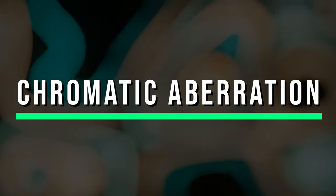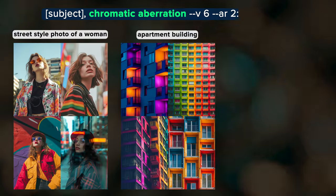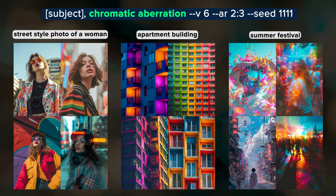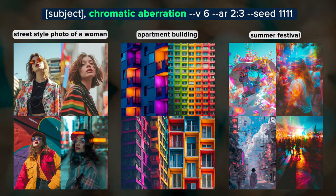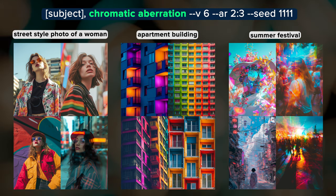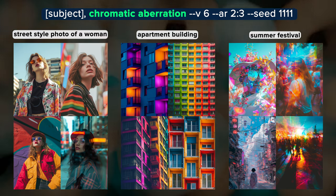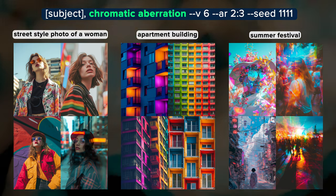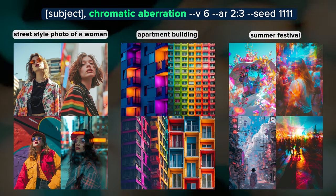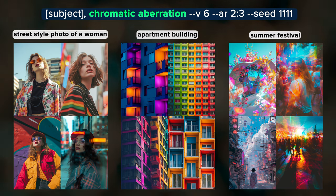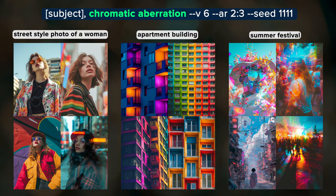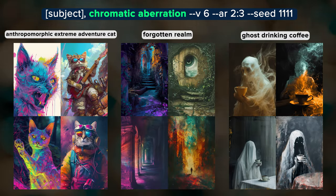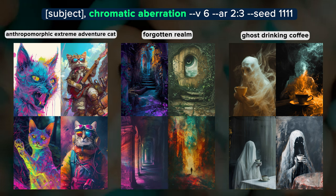Next up we have Chromatic Aberration. This occurs when a lens fails to focus all of the light wavelengths to the same point, resulting in unnatural colors often visible along high-contrast edges, such as a sunset landscape horizon. As a photographer I despise chromatic aberration in my images, but it makes for an interesting term to include in prompts and produces some really colorful and interesting results. I especially like the ones of the apartment buildings and the diversity of the summer festival images. The Adventure Cat results all lean towards illustration and digital art styles.